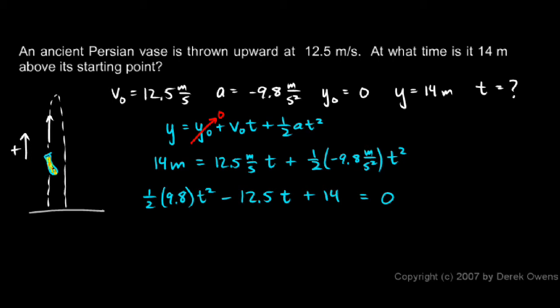So what do I put into the quadratic formula? A is equal to 4.9. That's a, the coefficient of my t squared term. B is equal to negative 12.5. And c is equal to 14.